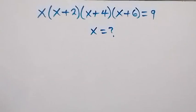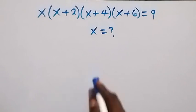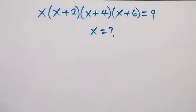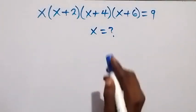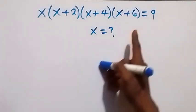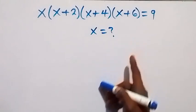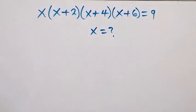Hello, you are welcome. How to solve for x in this nice algebra problem? We have x multiplied by x plus 2, then multiplied by x plus 4, multiplied by x plus 6, equals to 9.